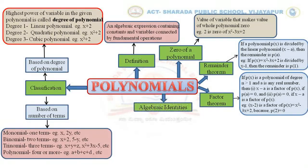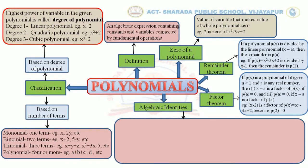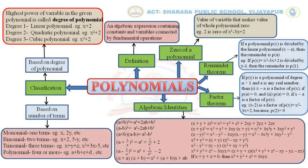Then, we discussed algebraic identities. There are many algebraic identities that we have covered. You can see all the identities here. For example, (a plus b) whole squared equals a squared plus 2ab plus b squared; (a minus b) whole squared equals a squared minus 2ab plus b squared. There are many more identities that we have learnt and used to solve problems.